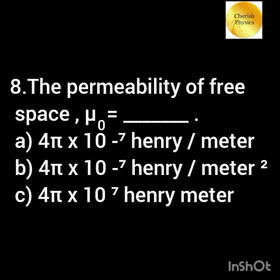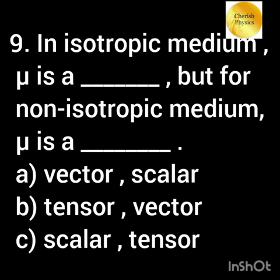The permeability of free space mu naught equals — In isotropic medium, mu is a dash, but for non-isotropic medium, mu is a dash.